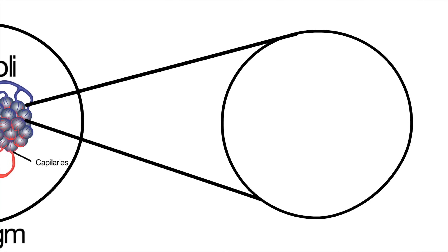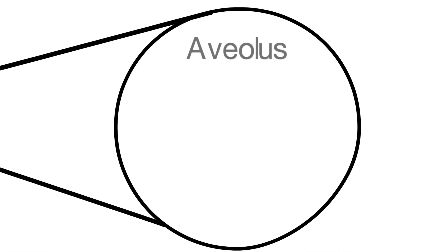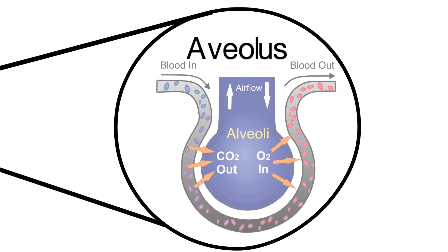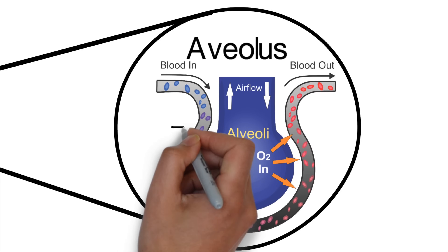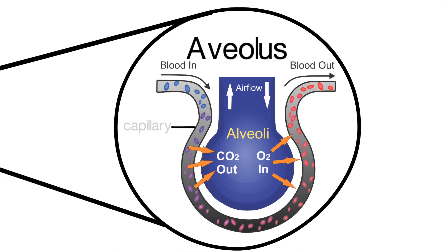If we zoom in on an individual alveolus — a tiny air sac — we notice a capillary almost wrapped right around it. That capillary brings deoxygenated blood, which has a lot of carbon dioxide in it, past the alveoli. The carbon dioxide diffuses out of the capillary into the alveolus, and you then breathe it out.